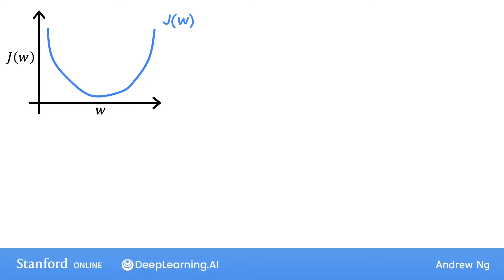Here on the horizontal axis is parameter w, and on the vertical axis is the cost J(w). Now, let's initialize gradient descent with some starting value for w at this location. Imagine you start off at this point right here on the function J. What gradient descent will do is update w to be w minus learning rate alpha times d/dw of J(w).